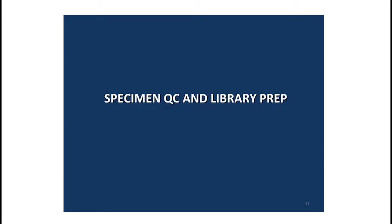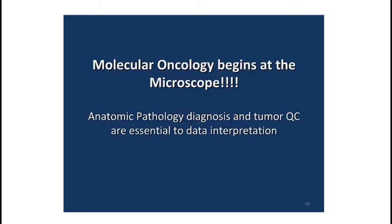Specimen QC and library prep — I cannot stress this enough. For those doing constitutional NGS testing who are interested in moving to formalin-fixed specimens or tumor testing: it's really critical that the tissue be assessed, that the tumor tissue be confirmed as actually tumor tissue, and if it's not tumor, it really shouldn't be sequenced. Then, really understanding the tumor cellularity is critical. It's essential that a pathologist is involved in this entire process.